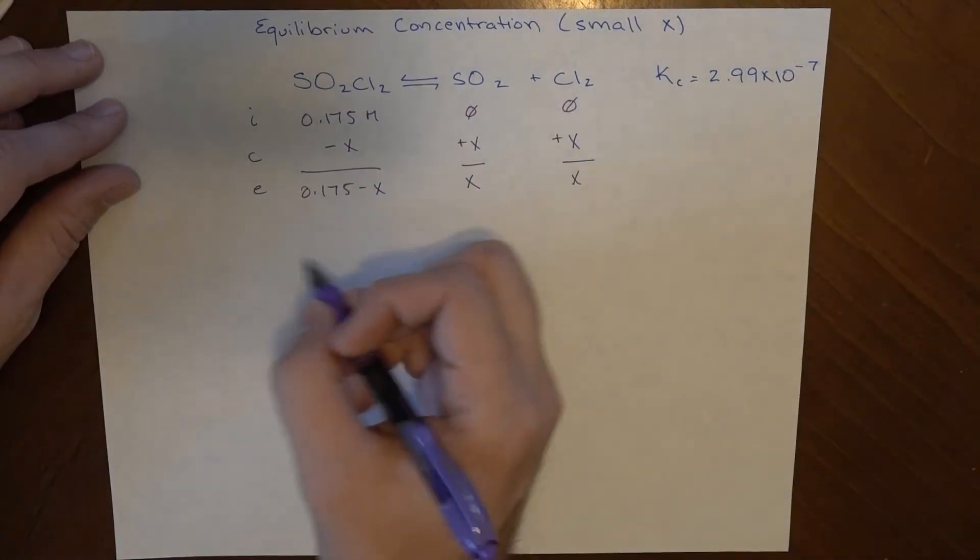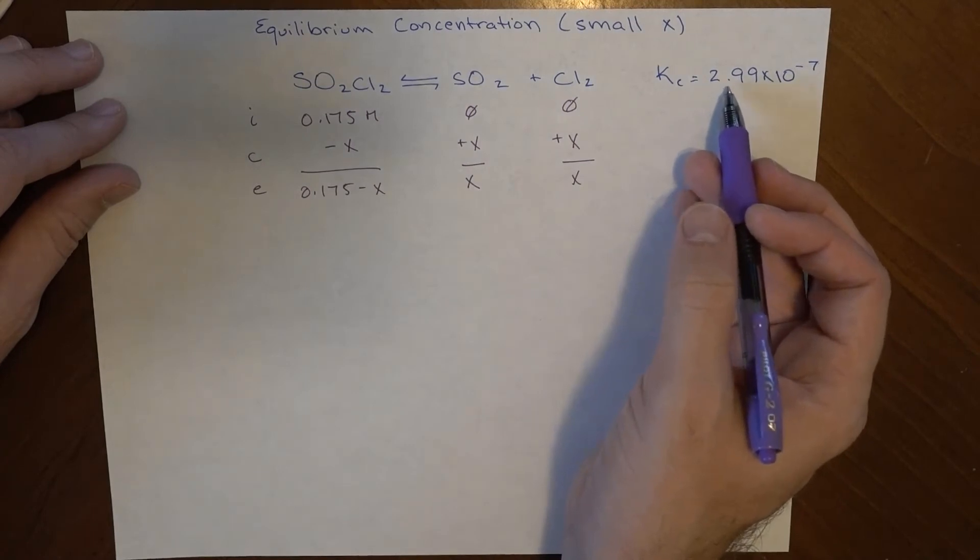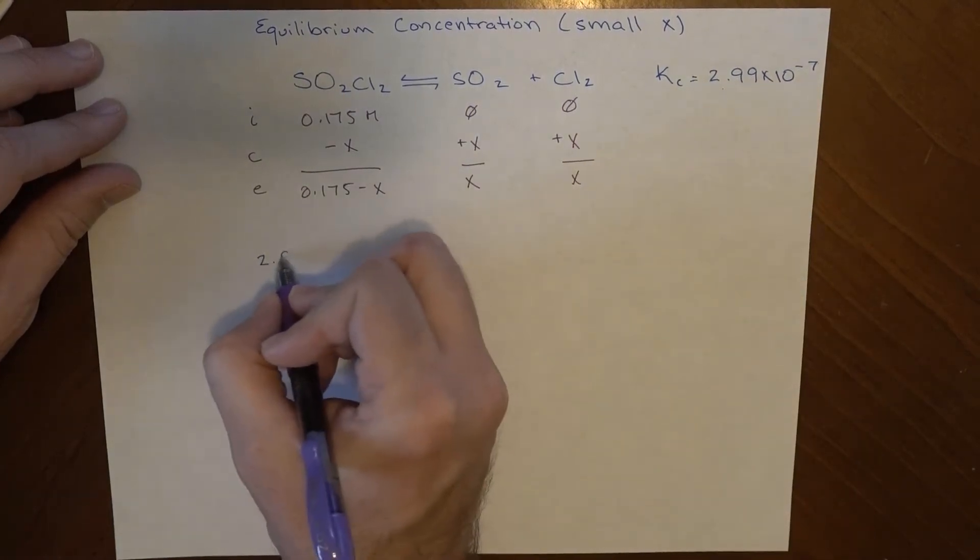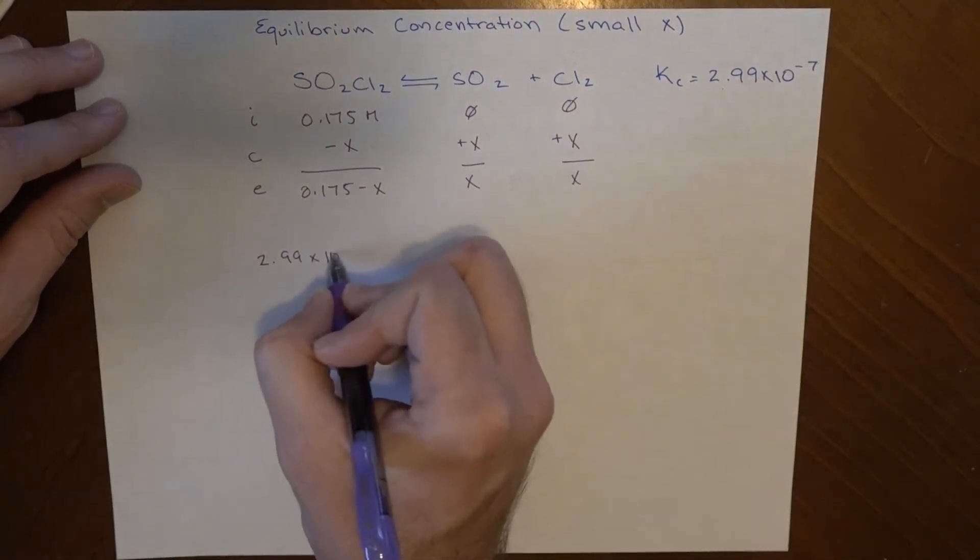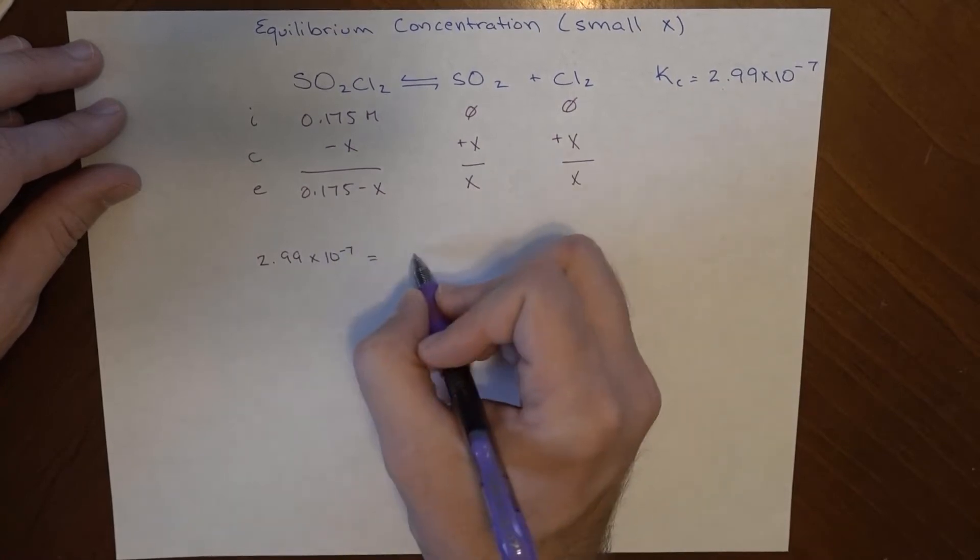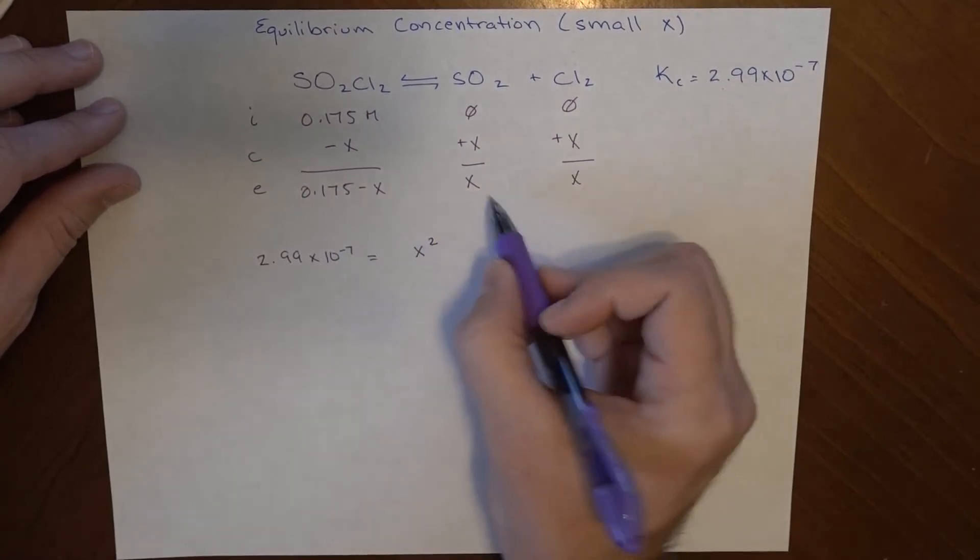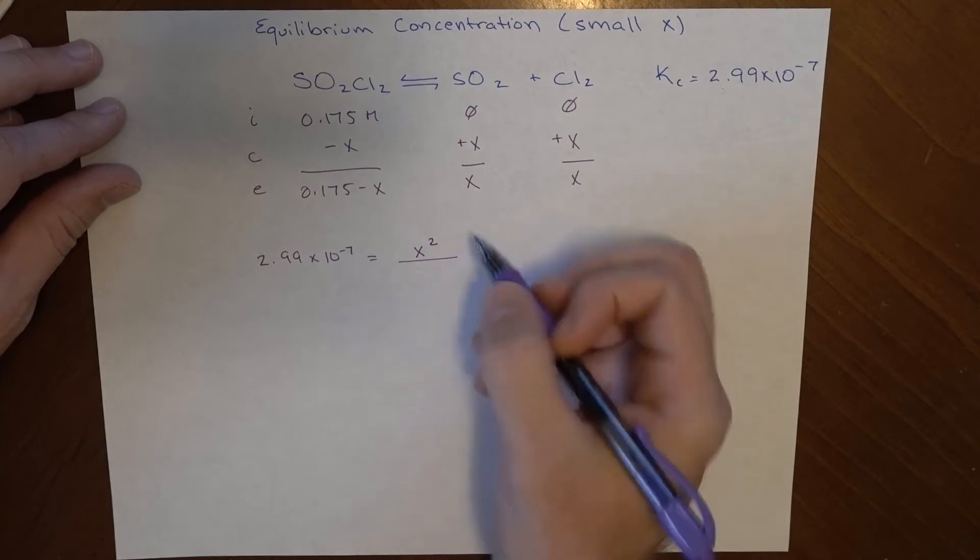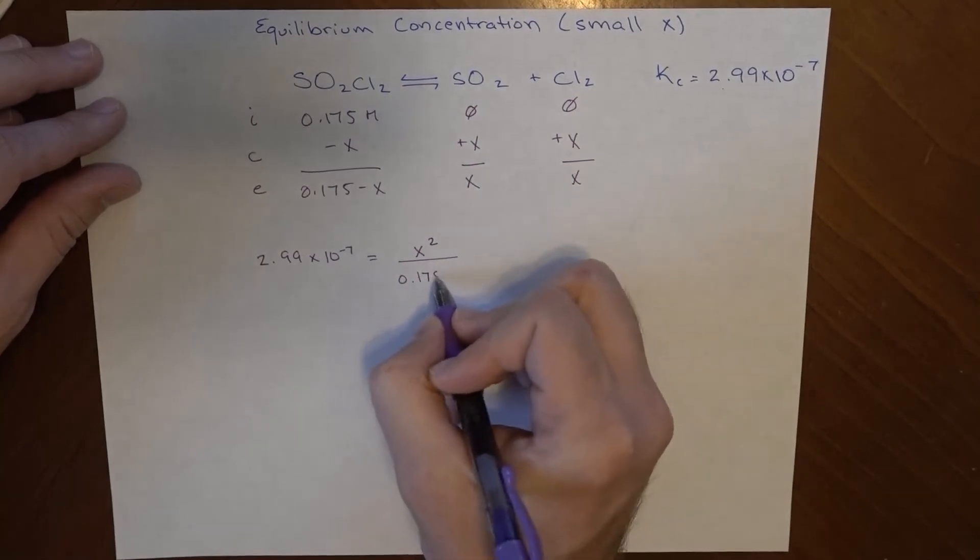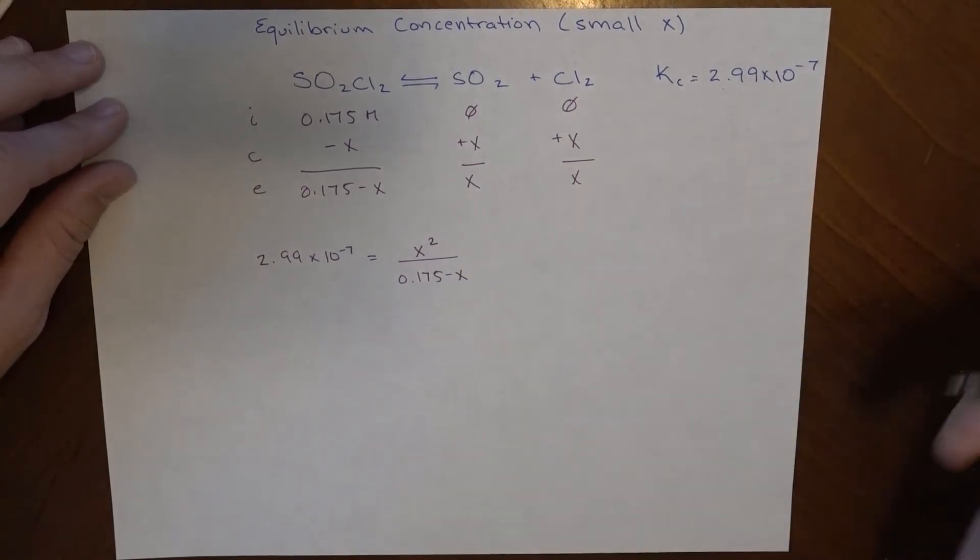So I'm going to plug this into my expression for getting this number. So 2.99 times 10 to the minus 7 is equal to x squared, this one times this one, over 0.175 minus x. Now, here's the thing.